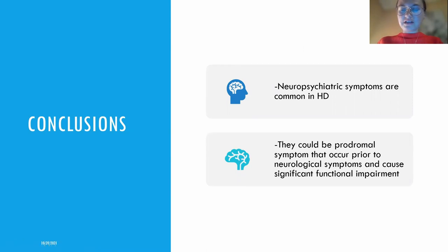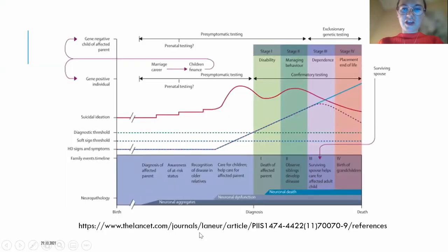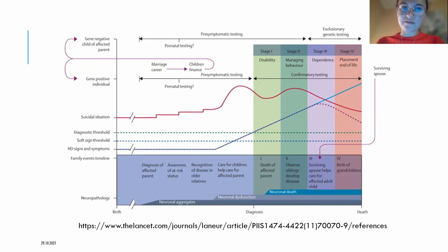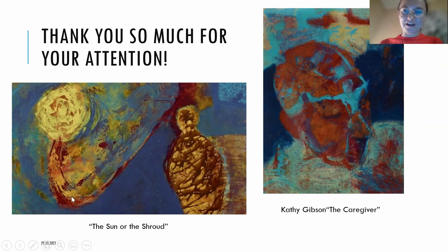In conclusion, neuropsychiatric symptoms are common in Huntington's disease, and they can be prodromal symptoms that occur prior to neurological symptoms, causing significant functional impairment. Neuropsychiatric symptoms occur at early stages of HD, which is very important to consider when treating both presymptomatic patients and those at very late stages of Huntington's disease. Thank you for your attention.